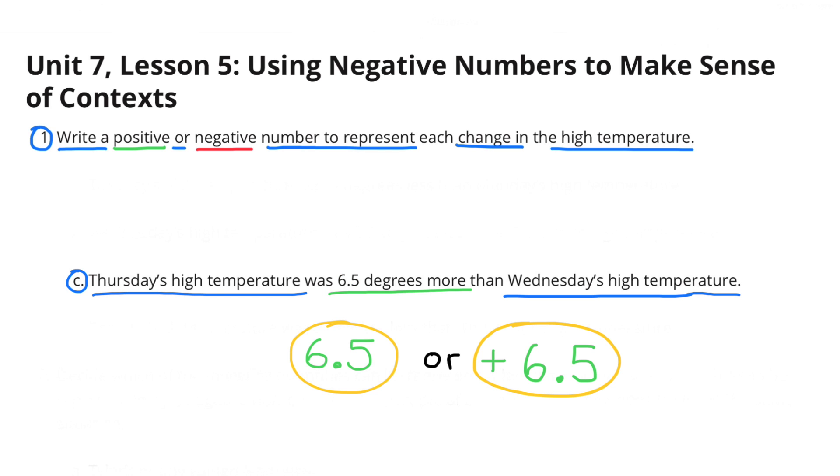C. Thursday's high temperature was 6 and 5 tenths degrees more than Wednesday's high temperature. That would be positive 6 and 5 tenths.